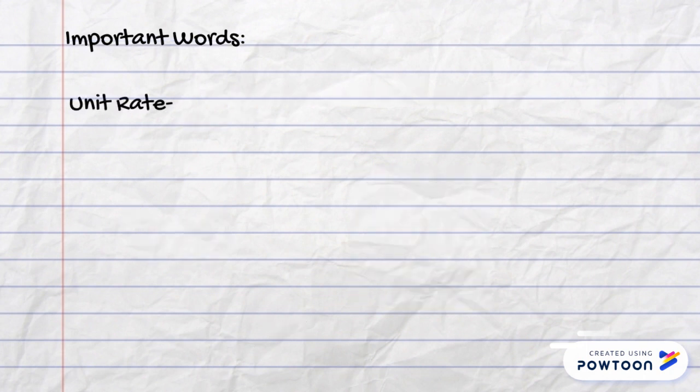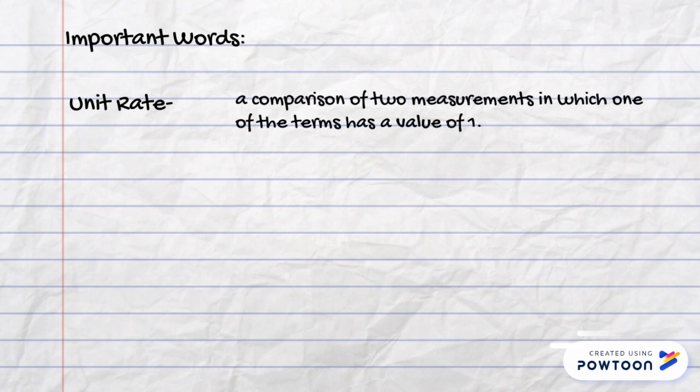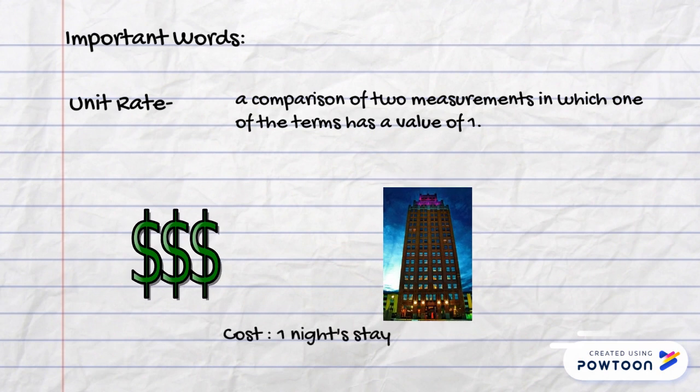Another word to know is unit rate. Unit rate is a comparison of two measurements in which one of the terms has a value of one. For example, we could look at the cost of one night stay at a hotel.